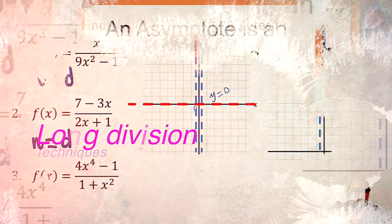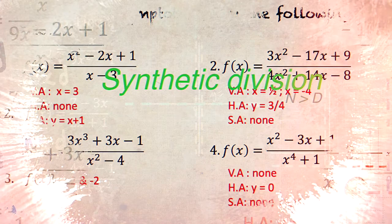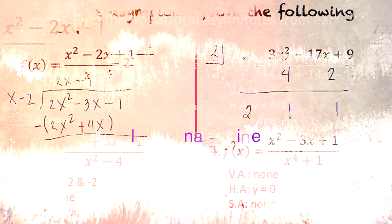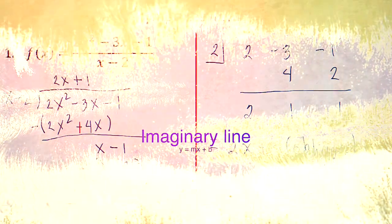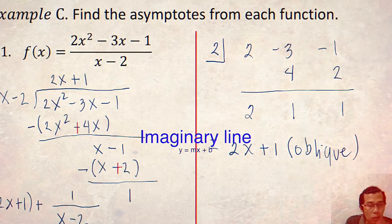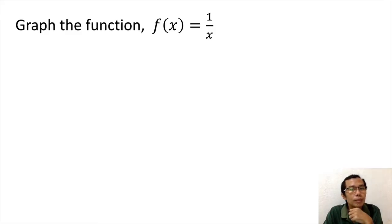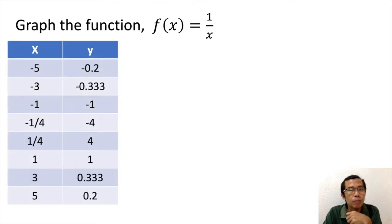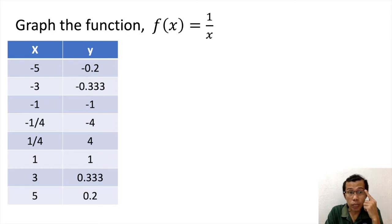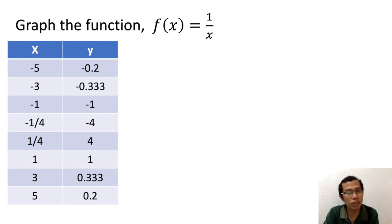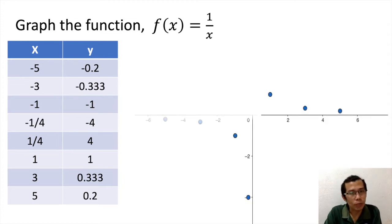So by unlocking its keys, say for example, we are asked to find the graph of a function 1 over x. Let's see how this goes. So first things first, we prepare our table, also known as the coordinates. So for this example, I chose these numbers. Then we plot those numbers on a Cartesian plane.